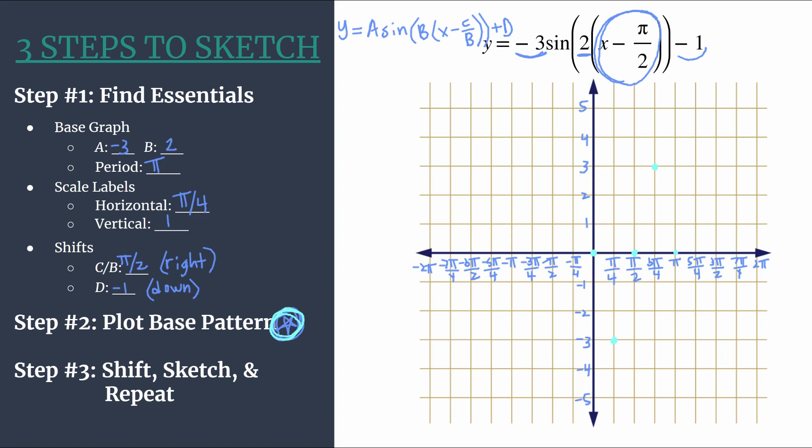And I like to close off the graph with the start of the next cycle. It'll be another zero happening at π. That'll just make it a little bit nicer as we're starting to sketch our final graph.